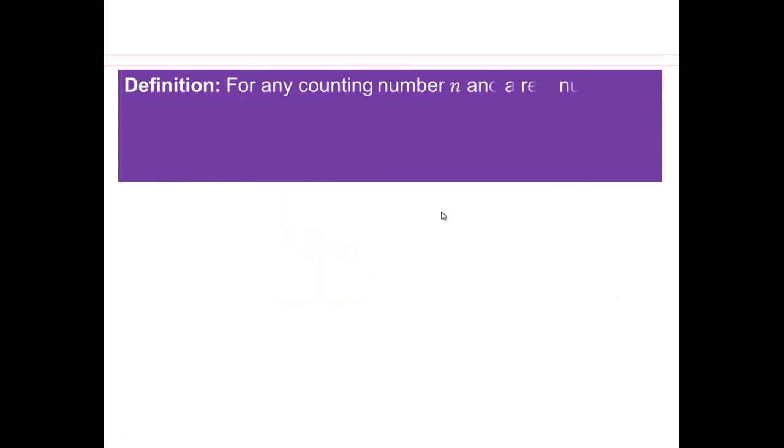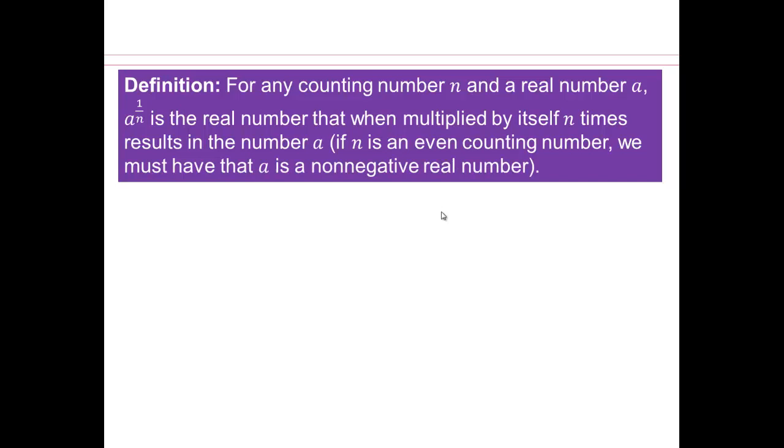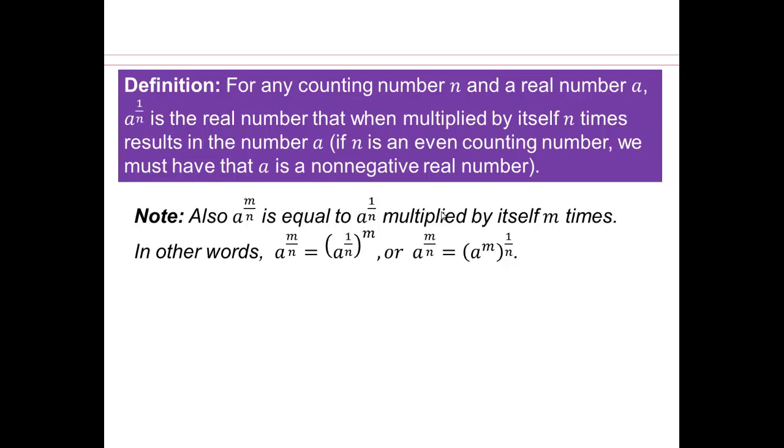So we are defining that for any counting number n and a real number a, and we are looking at non-negative real numbers. Then a to the power 1 over n is a real number that when multiplied by itself n times results in the number a. You might be like, huh, what? So if you feel like that, it's important to just look at an example. And we'll do that in a little bit.